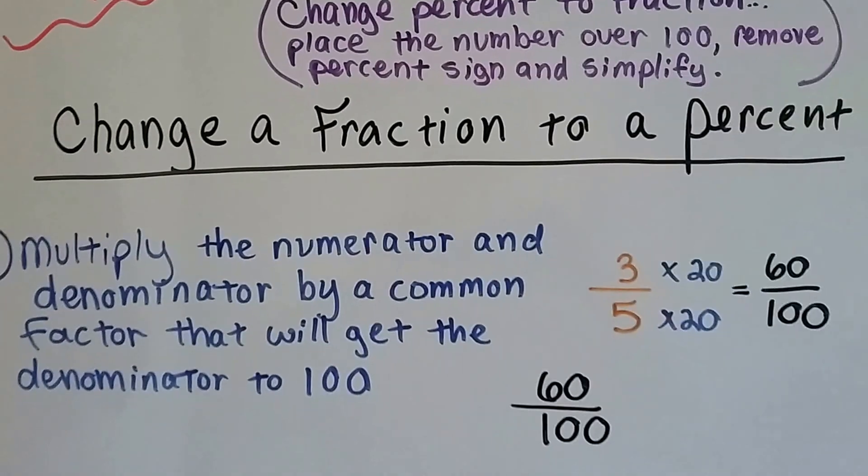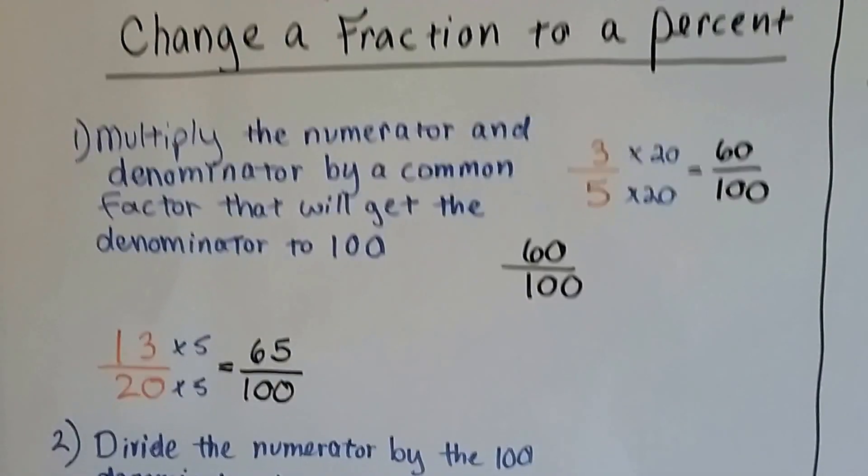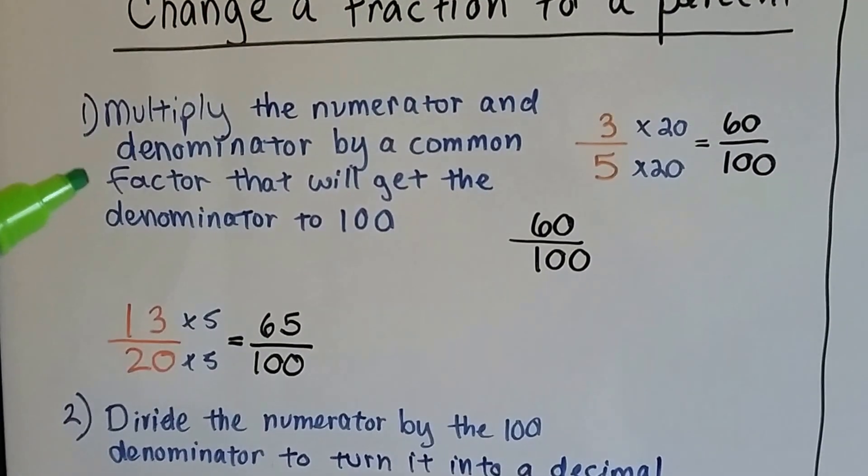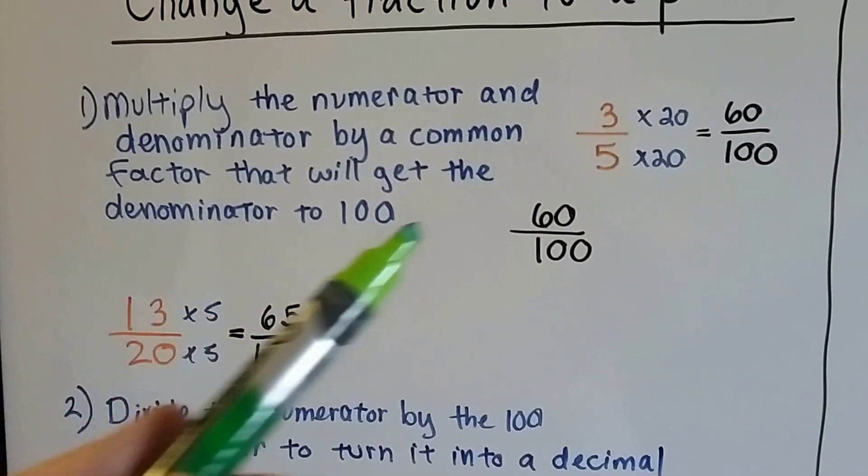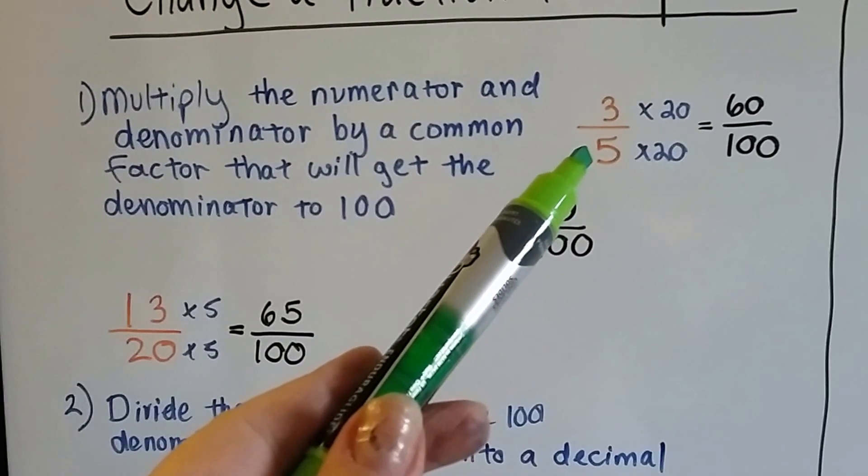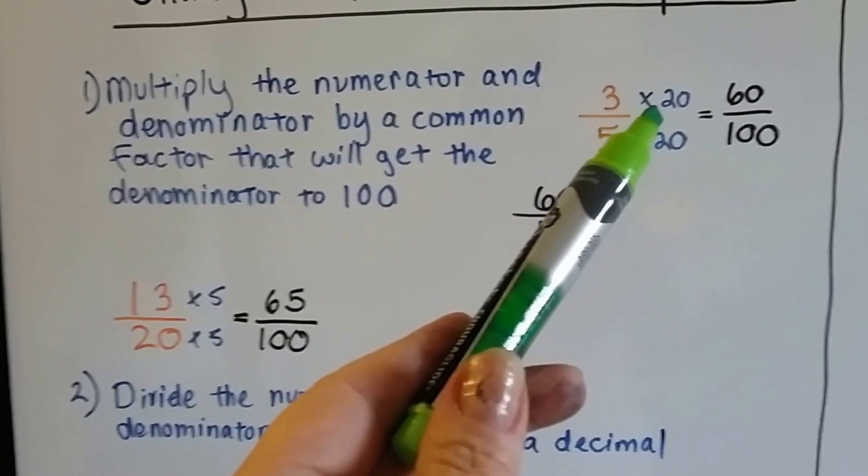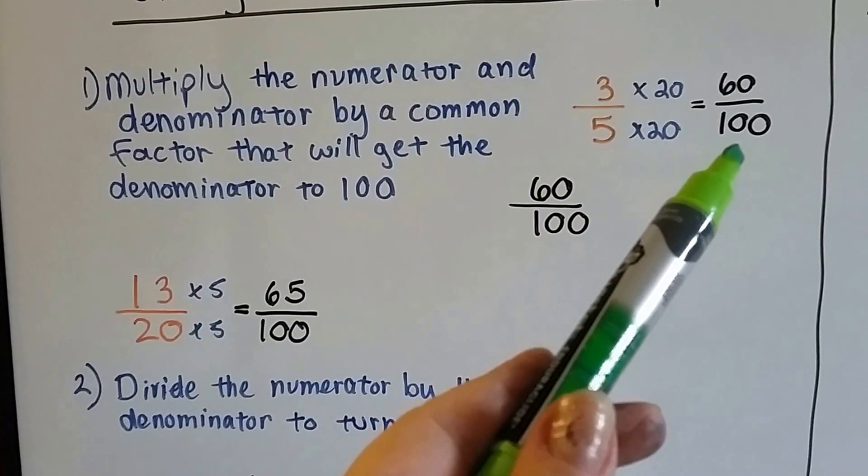But when we want to change a fraction to a percent, the other way around, the first thing we've got to do is multiply the numerator and denominator by a common factor that will get the denominator to 100. 5 times 20 would be 100. 3 gets jealous, it wants to be multiplied by 20 and it becomes 60 over 100.